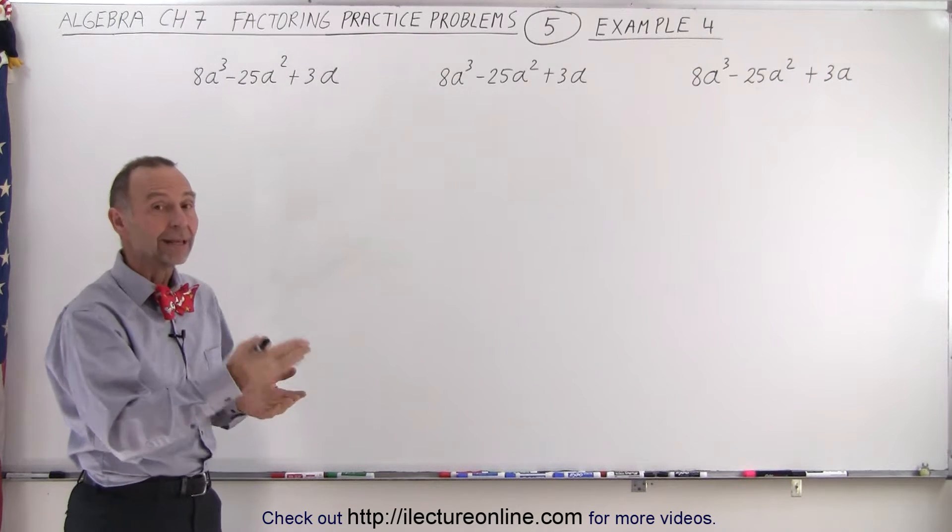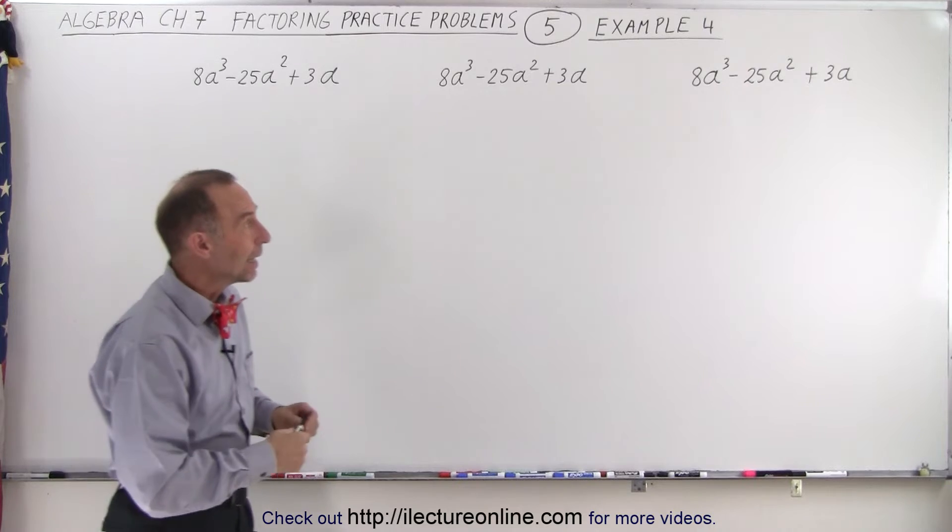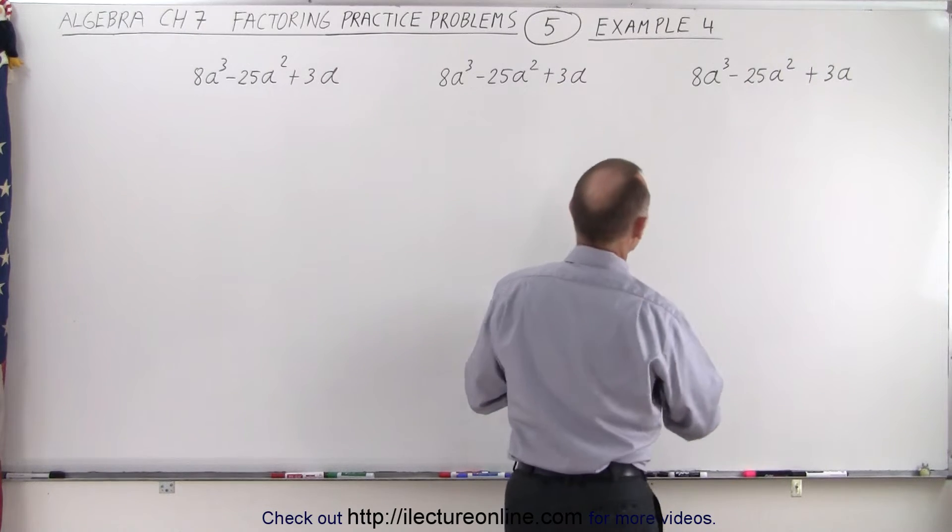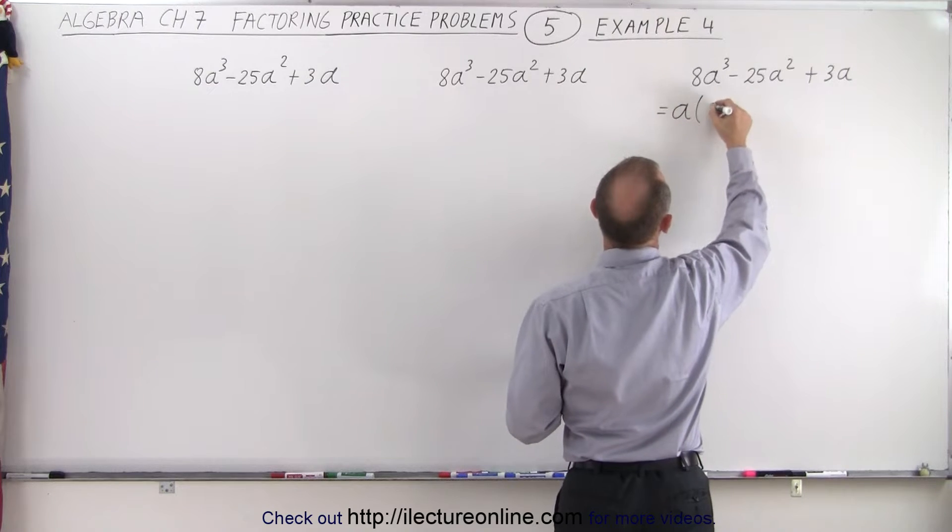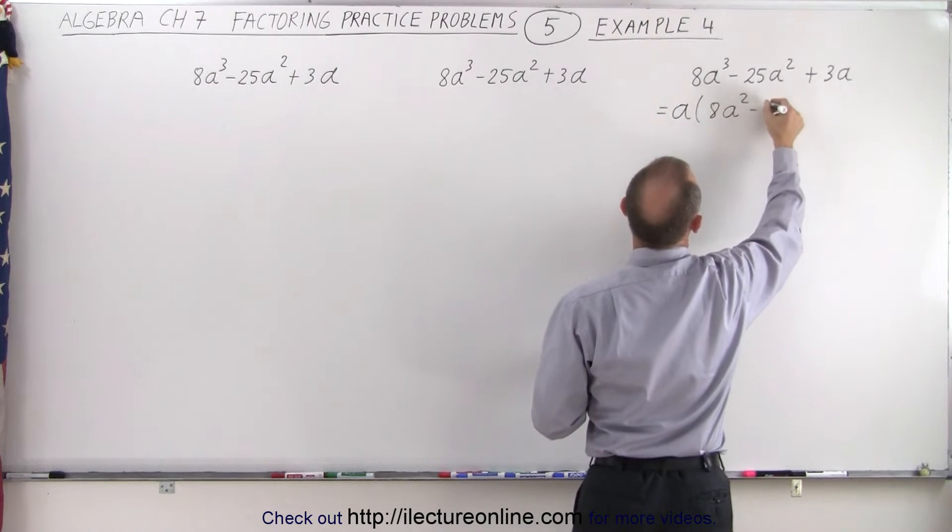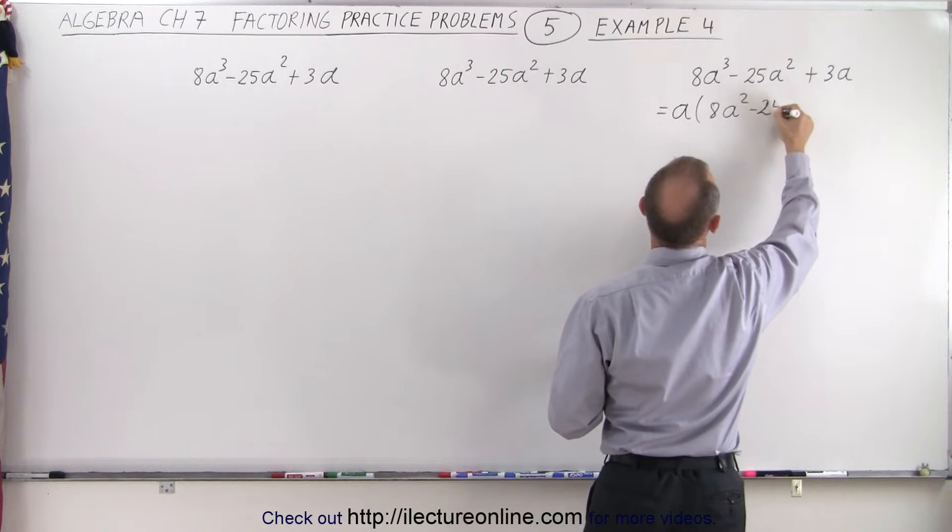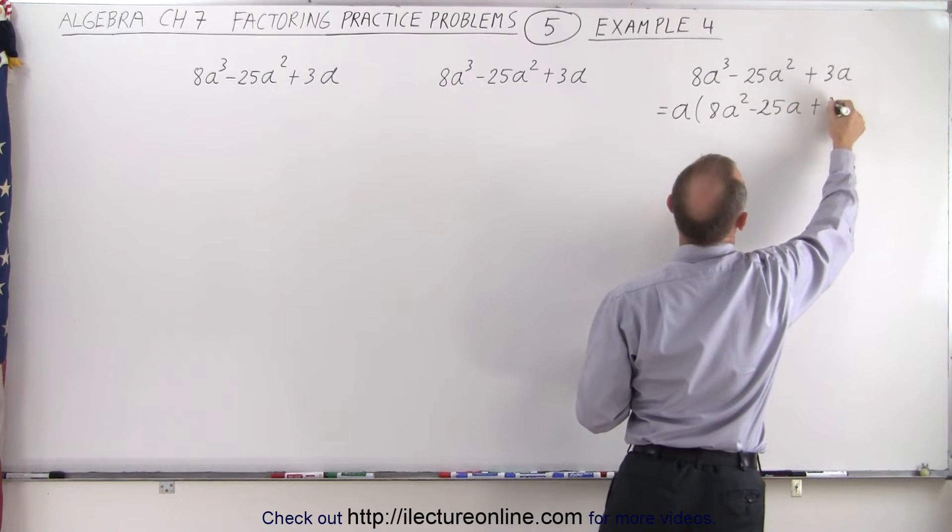You can see that we can factor out an 'a' and then end up with a trinomial that's a little bit easier to deal with. So here, this can now be written as a times 8a² - 25a + 3.